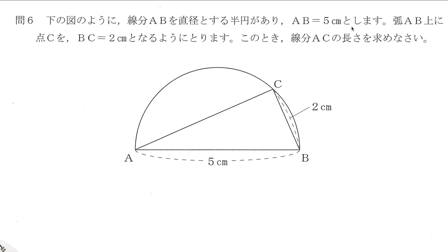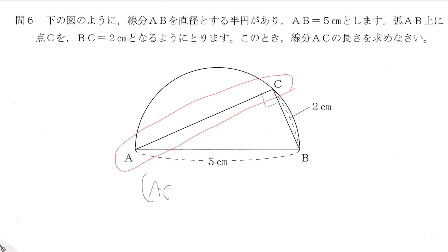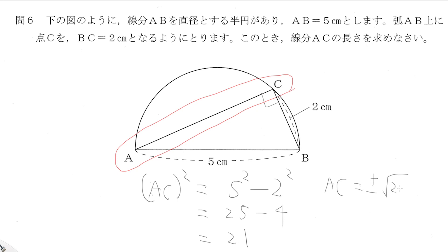線分ABを直径とする半円があり、ABイコール5cm。弦AB上に点CをBCイコール2cmとなるようにとります。線分ACの長さを求めなさい. AB is the diameter of this semicircle and we need to find the length of AC. When all vertices of a triangle are on the circumference of a circle, we get a right angle, so we can use the Pythagorean theorem. AC squared equals 5 squared minus 2 squared — 25 minus 4 — which is 21. AC is a length so it must be positive: AC equals root 21.